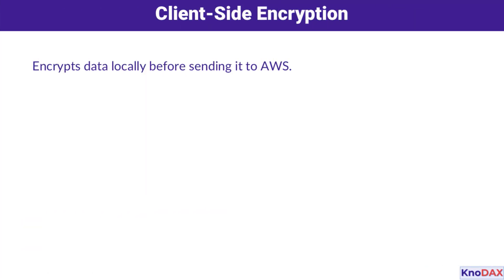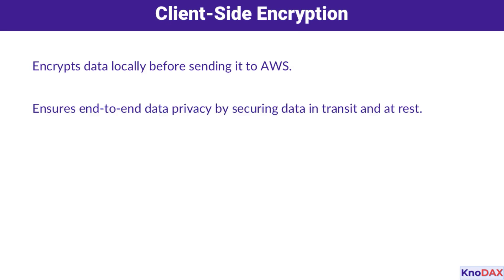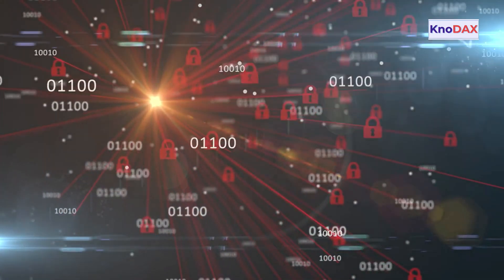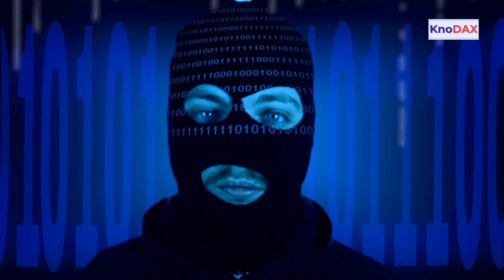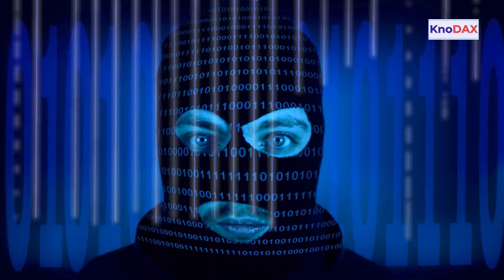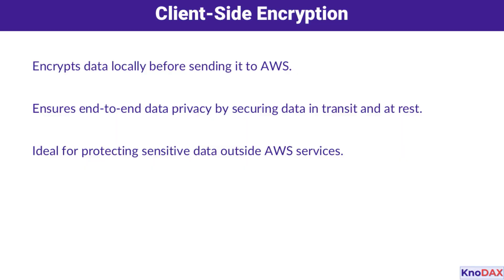Next, let's look at how client-side encryption compares to this approach. Client-side encryption puts you in the driver's seat. Data is encrypted locally before it's even sent to AWS. This ensures privacy throughout its lifecycle, whether in transit or at rest. It's ideal for highly sensitive information that needs an extra layer of security.